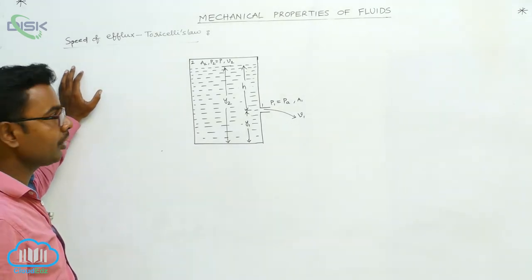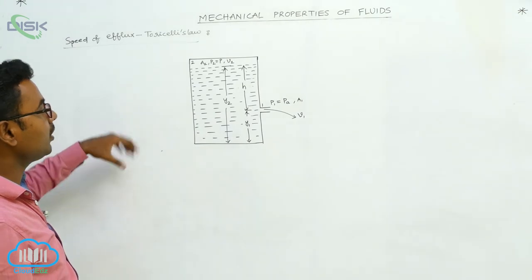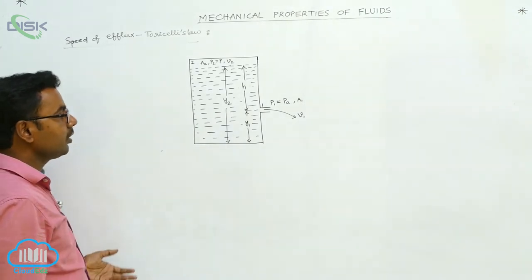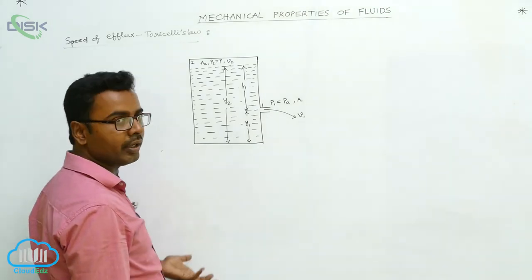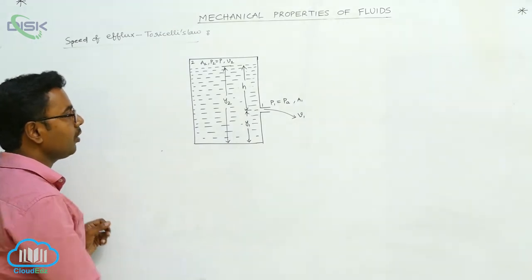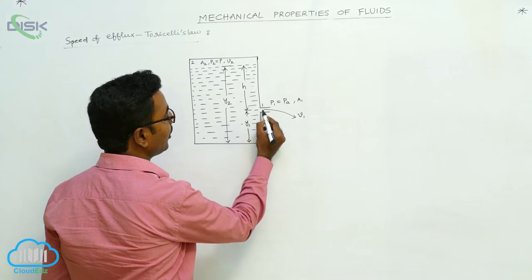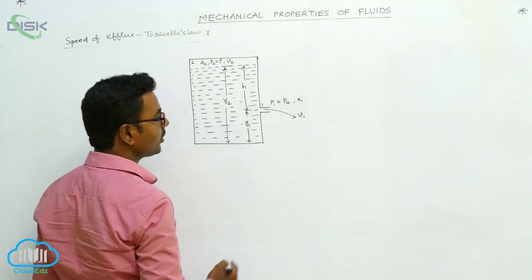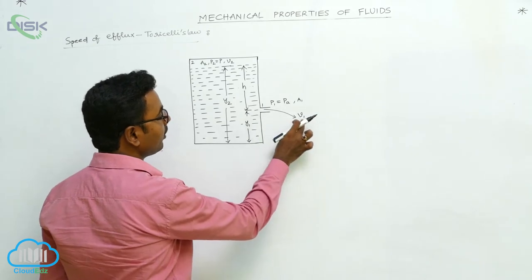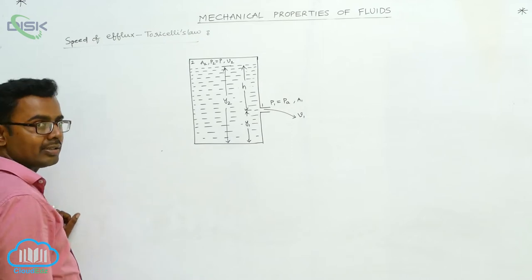Speed of efflux can be measured using Torricelli's theorem. Efflux means outflow of fluid. Now, with what speed the outflow of fluid will go out, we are going to find using Torricelli's theorem. This is a tank having an orifice. From the orifice, the fluid is flowing out — the flow of fluid outside is called efflux. The efflux velocity is V1.